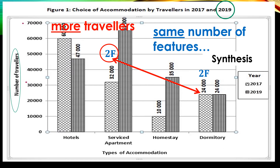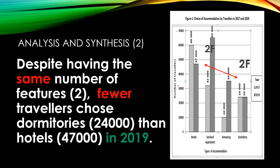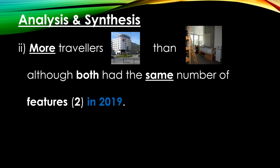You can compare these two key features. Here is the analysis and synthesis: 'Despite having the same number of features — two — fewer travelers chose dormitories (24,000) than hotels (47,000) in 2019.' This is the comparison.